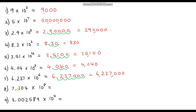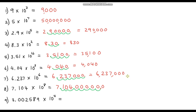Question eight: 7.104 times 10 to the power of 8. So we have 7.104, and let's add quite a few placeholder zeros. We move the decimal point eight places — one, two, three, four, five, six, seven, eight. We've almost got the right number of zeros, so we remove the last one. Our final answer is 710,400,000 — seven hundred and ten million four hundred thousand.